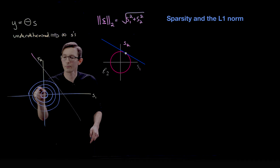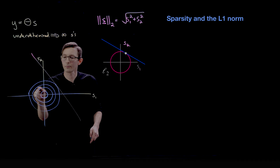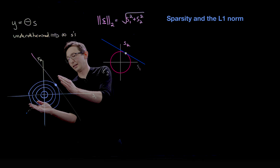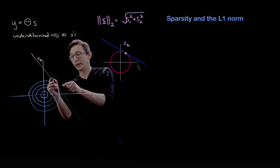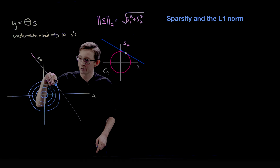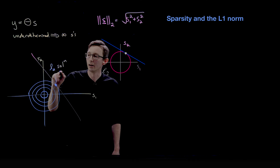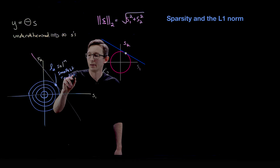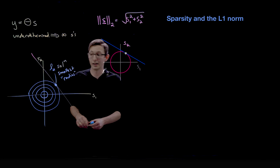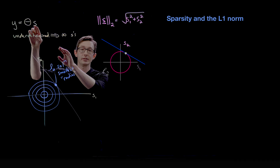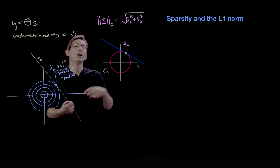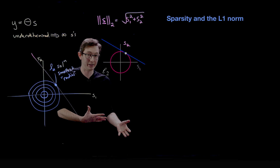That intersection point is the one on the line with the minimum two-norm — it intersects the circle of smallest radius. Every other point intersects a larger circle and has a larger two-norm. So this is the L2 solution with the smallest radius. Out of all infinitely many solutions on this line, we find the one minimizing the two-norm, which is what the SVD does.